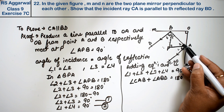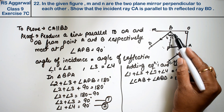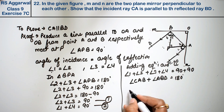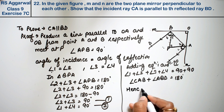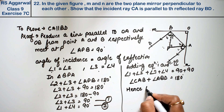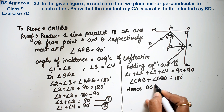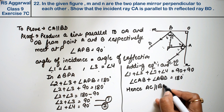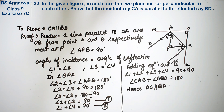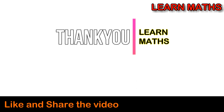When these two co-interior angles sum to 180 degrees, hence CA is parallel to BD. Proved. Thank you. If you understand the step-by-step solution in this video, please subscribe to my channel on Maths and share it with your friends. Thank you.